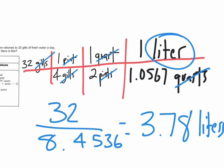And that, my friends, is our answer. That is 3.78 liters is the same as 32 gills. All right, ladies and gentlemen, good luck on the rest of the assignment. Let me know if you have any questions. Thanks.